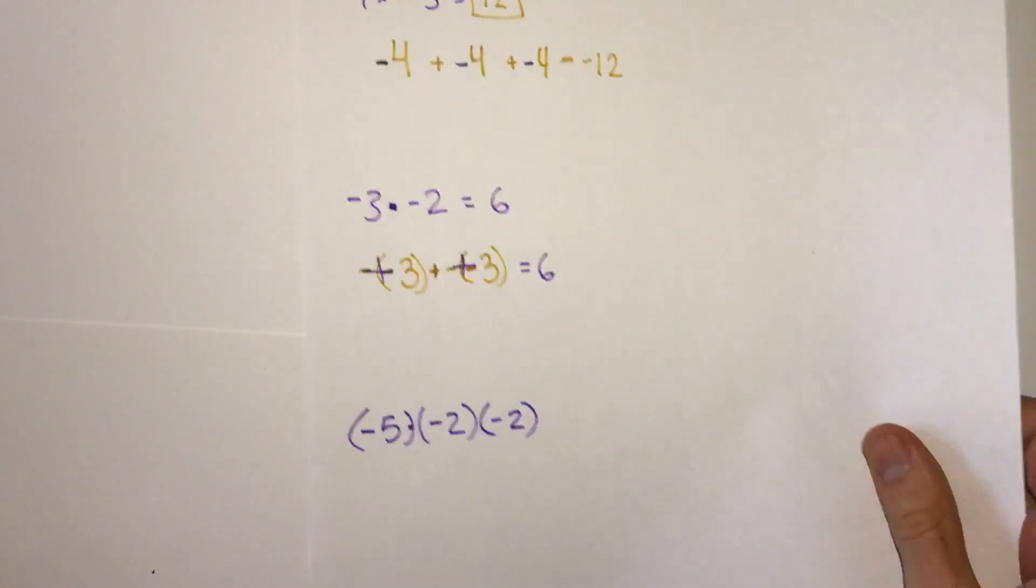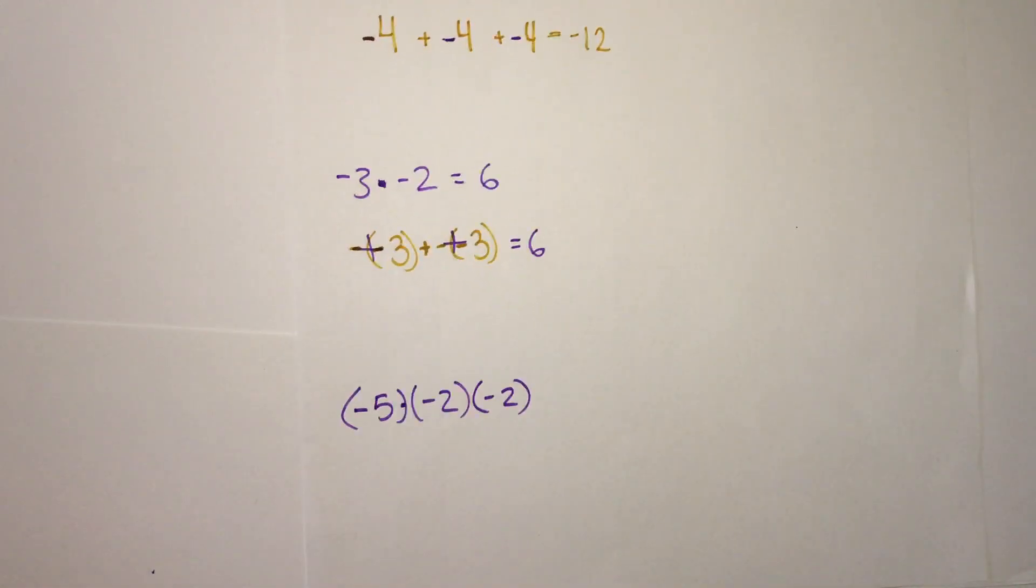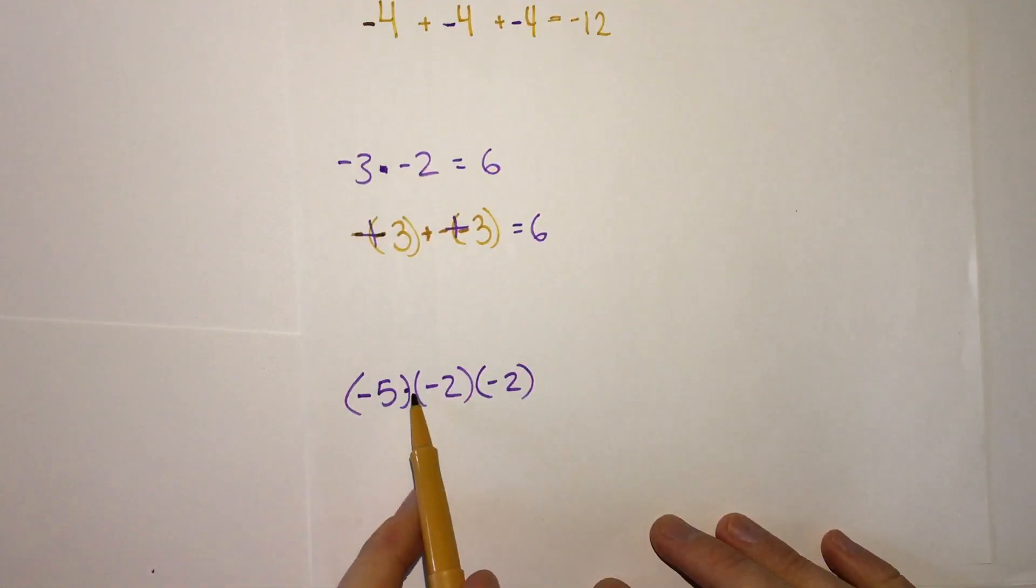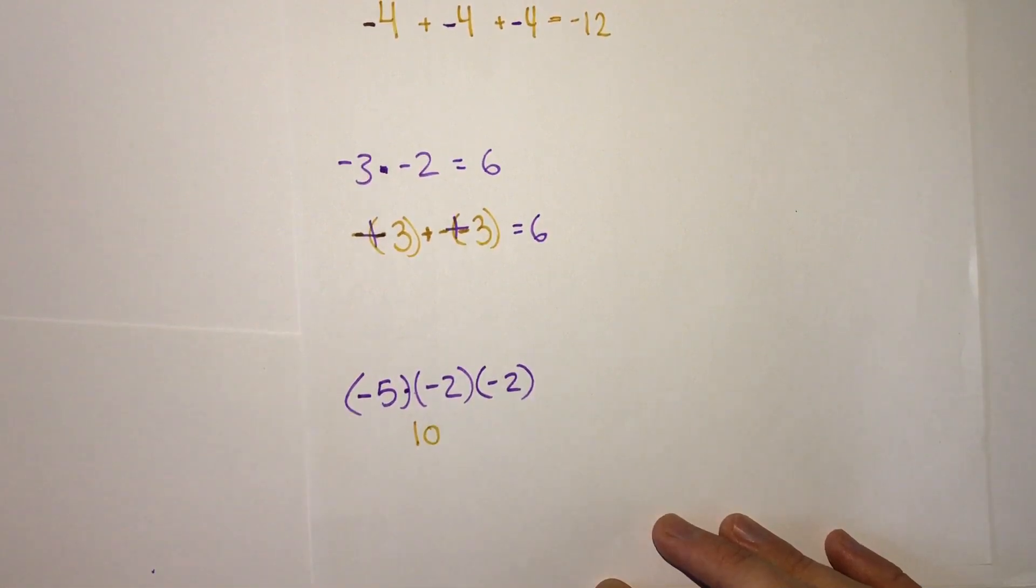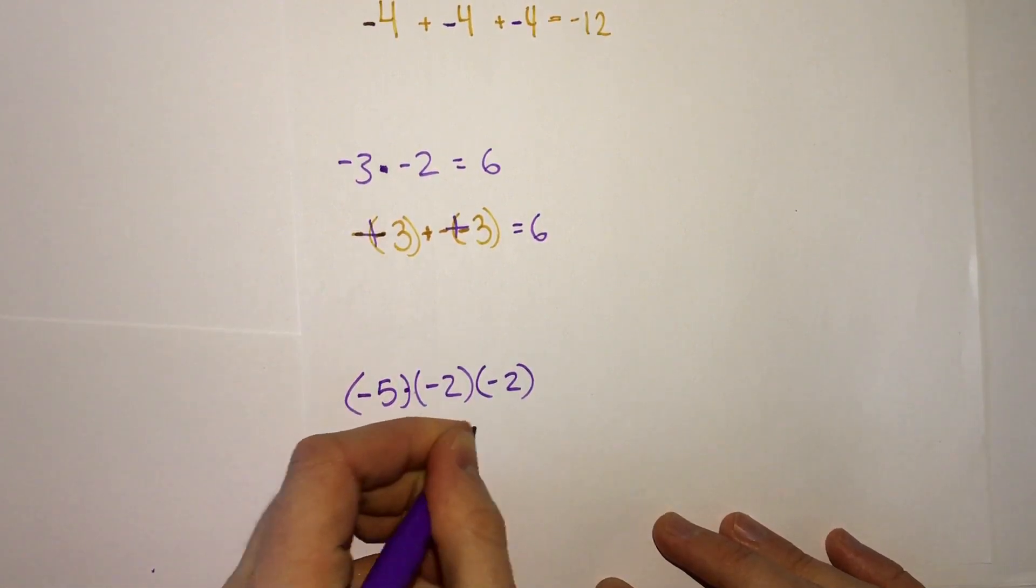What happens if we have multiplication for three numbers? We'll see multiplication sometimes is written just between parentheses with nothing in between it. This means negative 5 times negative 2 times negative 2. From our rules, we know negative 5 times negative 2 is positive 10.